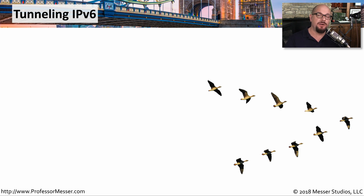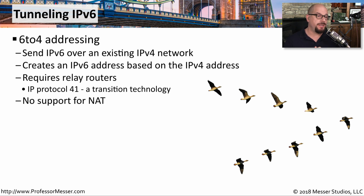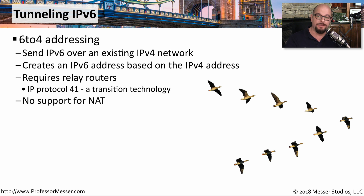You may have a need to tunnel IPv4 within IPv6, or vice versa. One of these transition technologies is 6-to-4 addressing. This allows you to send IPv6 between different devices, even if the connection between those devices happens to be an IPv4 network. This is one that requires relay routers on both ends of the conversation, and it uses IP protocol 41 to identify these special packets that contain IPv6 information. Unfortunately, 6-to-4 addressing doesn't support network address translation, so as a transition technology, it might only apply to very specific network configurations.